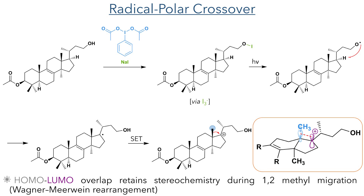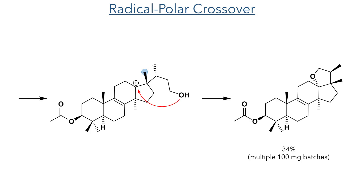In the next step, the authors carried out the crucial radical polar crossover reaction. The reaction of bisacetoxyiodobenzene and sodium iodide transiently generates triiodide, which reacts with the hydroxyl group to form an iodo-oxy intermediate that produces a radical upon irradiation. An intramolecular hydrogen transfer then occurs, forming a radical that can undergo single electron transfer to form a carbocation. This carbocation then undergoes a Wagner-Mierwein rearrangement, which is a 1,2-methyl migration. This is a stereoretentive migration, as the overlap of the methyl HOMO with the empty p orbital guarantees that it only occurs on the top face. This migration produces a new carbocation that is then attacked by the hydroxyl group, forming the product in a 34% yield. This reaction proved difficult to scale up and was instead carried out on multiple 100mg batches when more material was required.